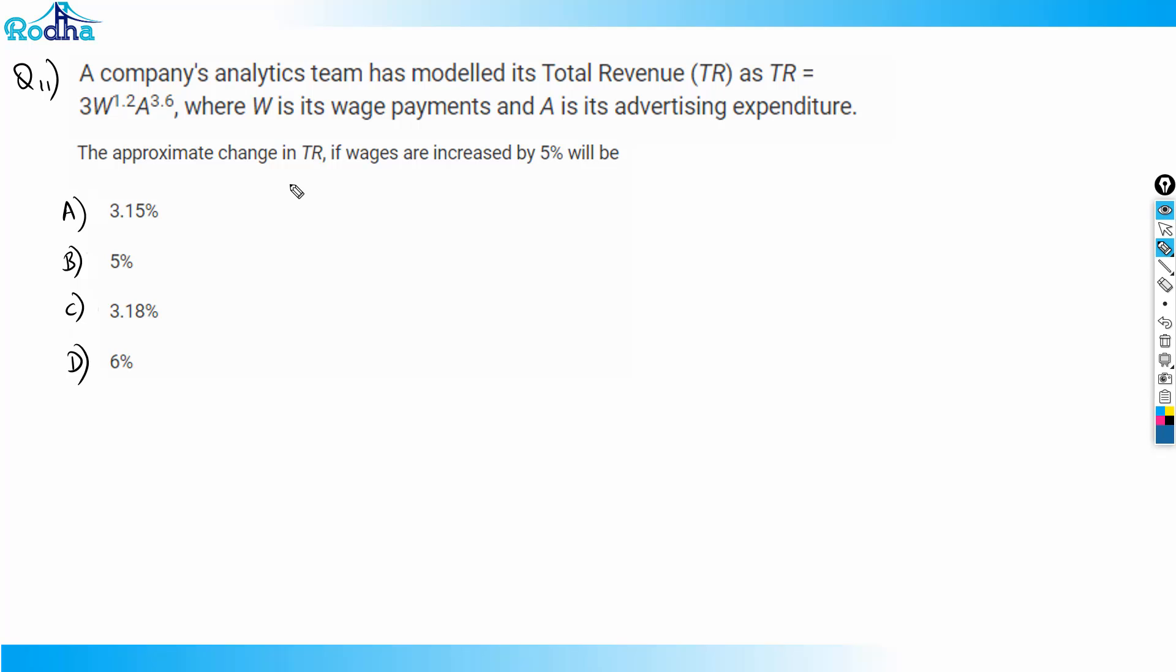Okay, so look at this question. It says that a company's analytics team has modeled its total revenue TR as TR equals 3W to the power 1.2 times A to the power 3.6, where W is its wage payments and A is its advertising expenditure. The approximate change in TR if wages are increased by 5 percent will be...